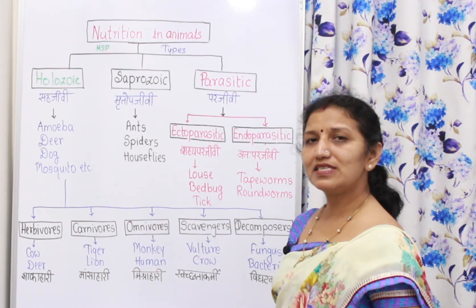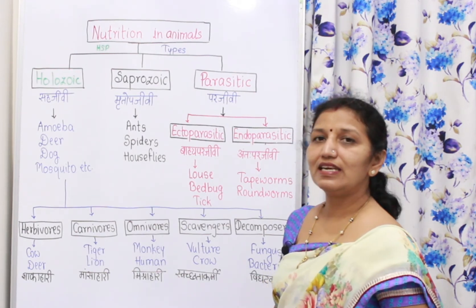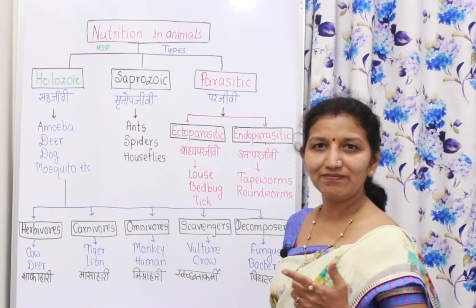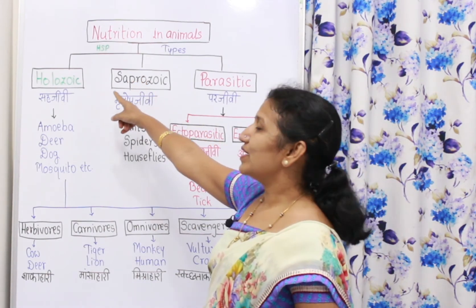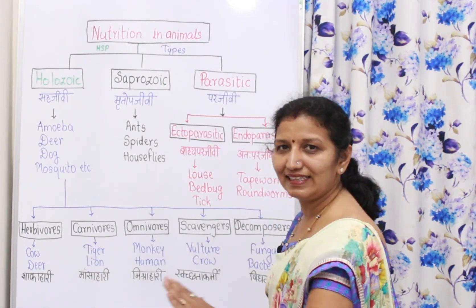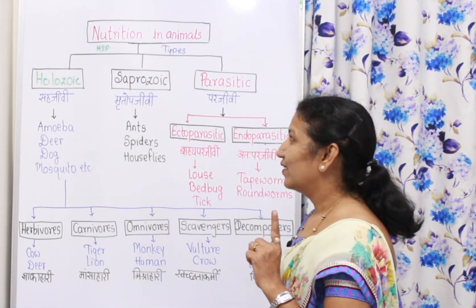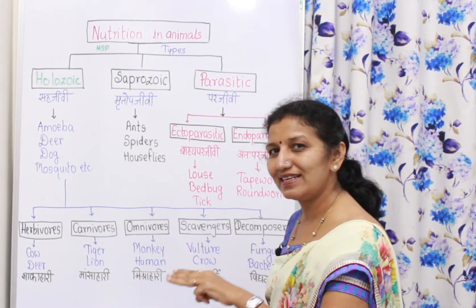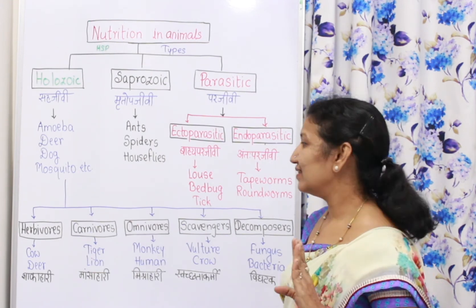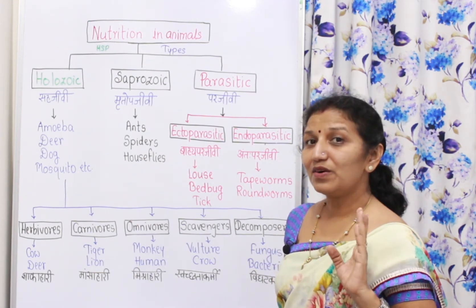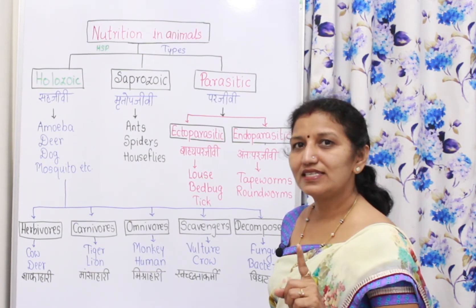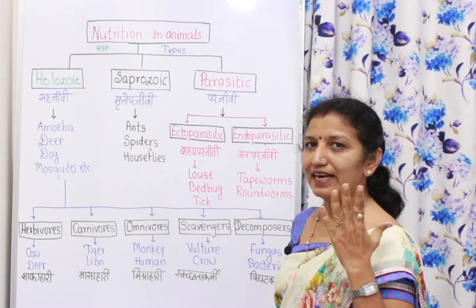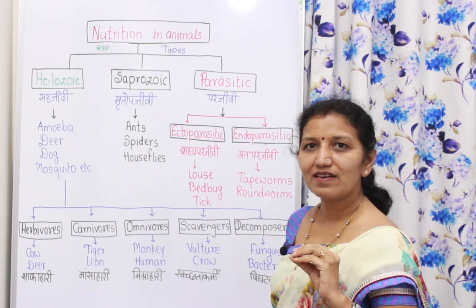In this way, we have studied nutrition in animals. To revise in short: the three main types are holozoic, saprozoic, and parasitic — with ectoparasitic and endoparasitic as subtypes of parasitic. Holozoic is further divided into five: herbivores, carnivores, omnivores, scavengers, and decomposers.